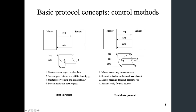The valid data appears slightly earlier than the ACK is asserted, which is reasonable because the servant must make sure the data is valid on the bus before it actually asserts the ACK signal. The master will look at the ACK and will not read until it sees the ACK asserted.